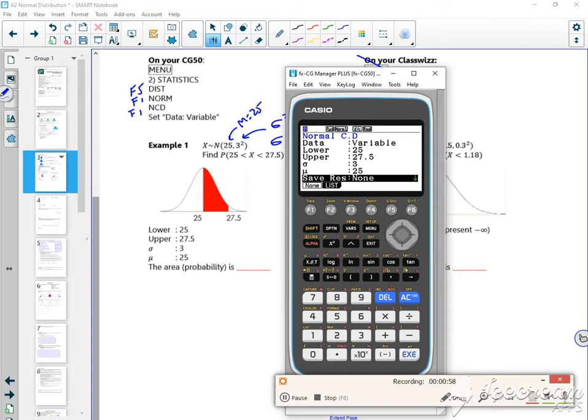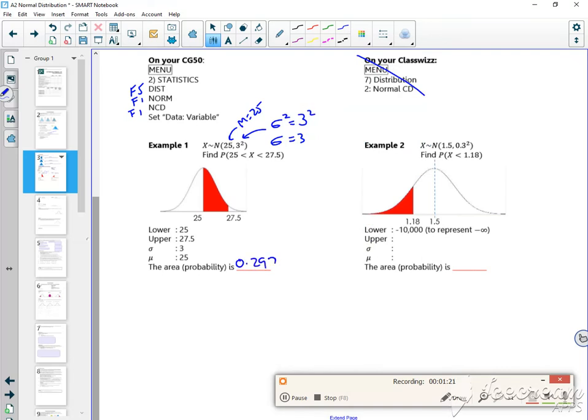But what's quite nice, instead of that, if you press down a couple of times you get F6 for draw, and it gives you a picture of what the area represents. It gives you the probability as well, but the picture you draw to make sure it's okay would reflect what's there. So we get 0.2977.